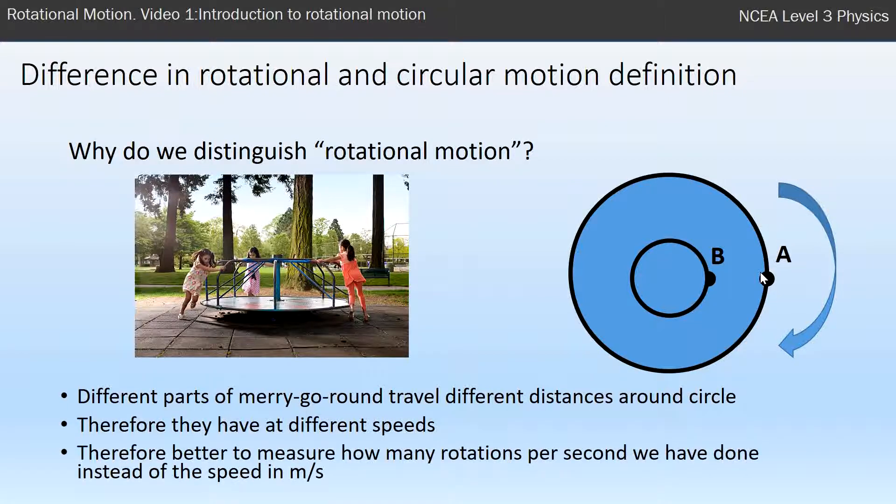So instead of measuring the speeds of the different parts, we just talk about how many rotations the full merry-go-round has done, and the speed we measure is rotations per second instead of using just normal speed of meters per second.